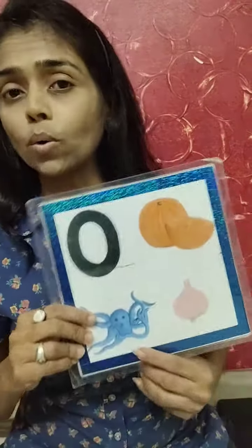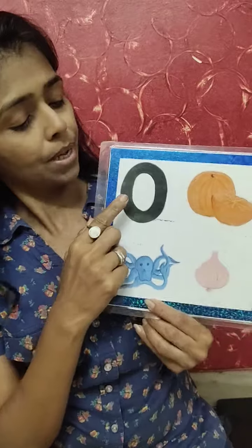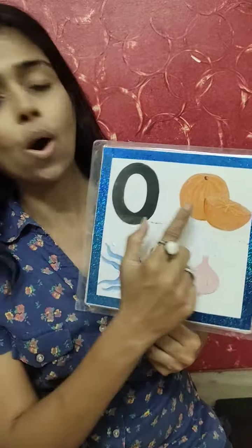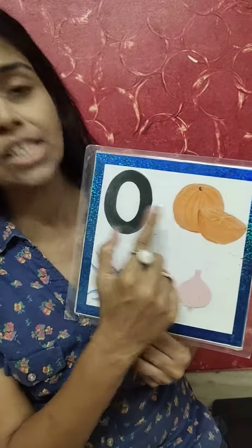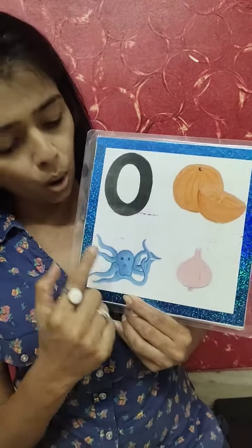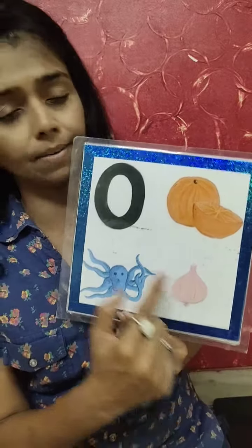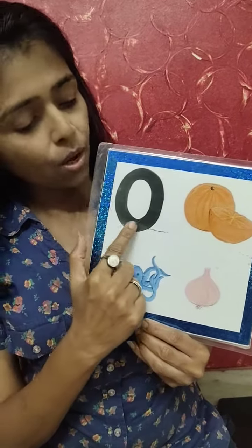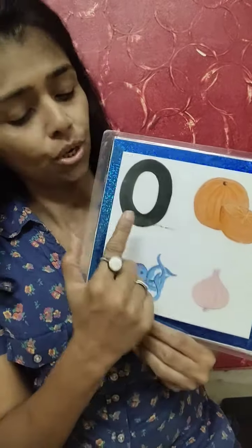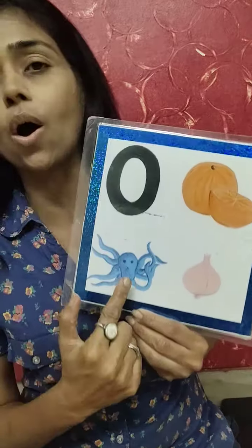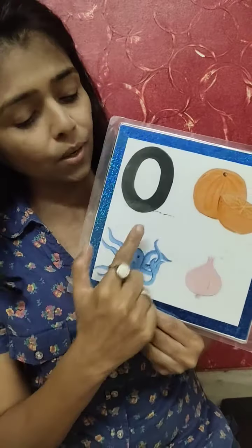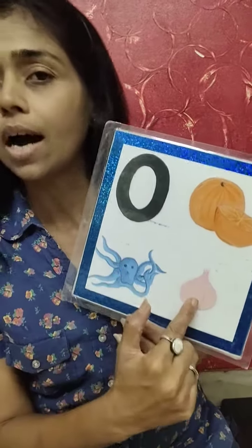So now after N comes letter O. Sound of O is O. O orange, O octopus, O onion. Again one more time: O orange, O octopus, O onion.